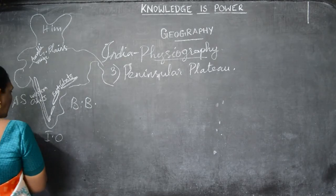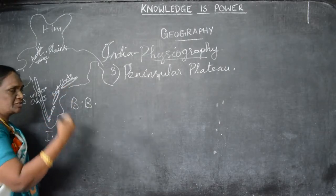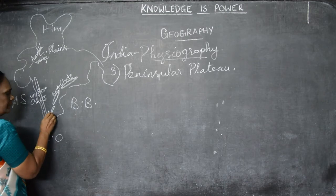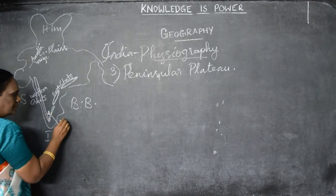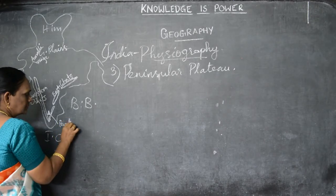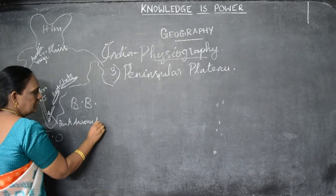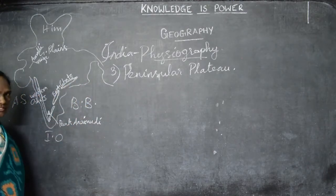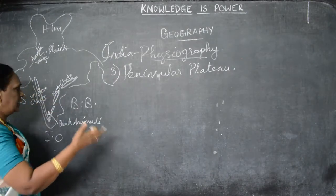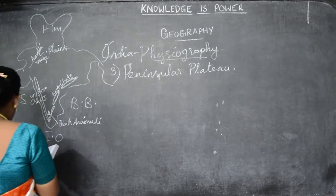The highest peak in the Peninsula Plateau is Peak Anaymudi, located in the Deccan region. Peak Anaymudi is in the Annaimalai hills. It is the highest peak in this plateau region.